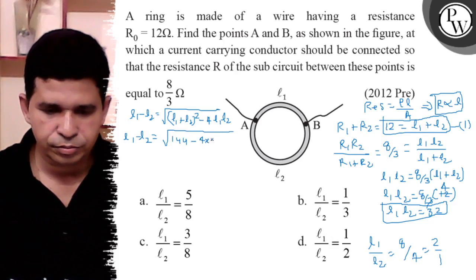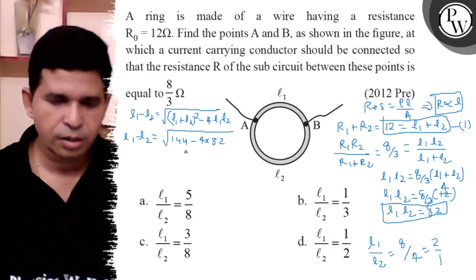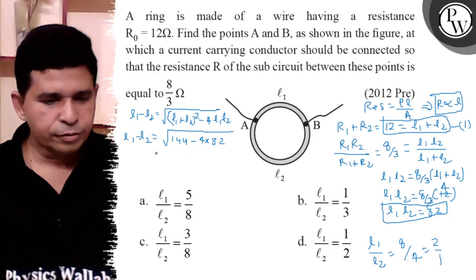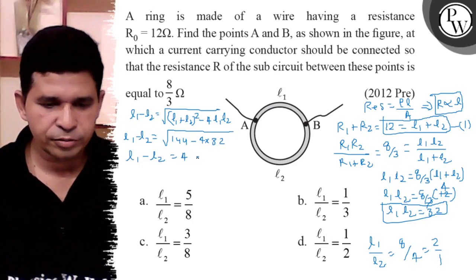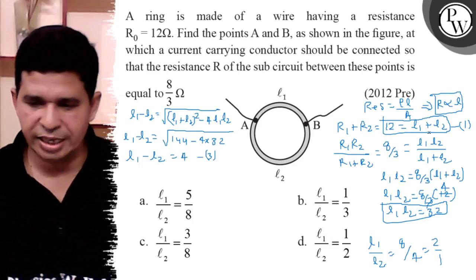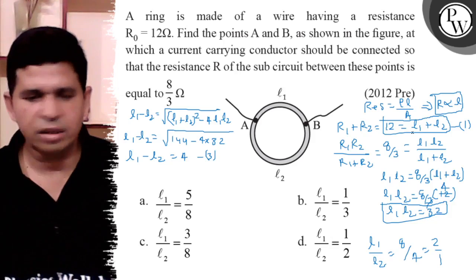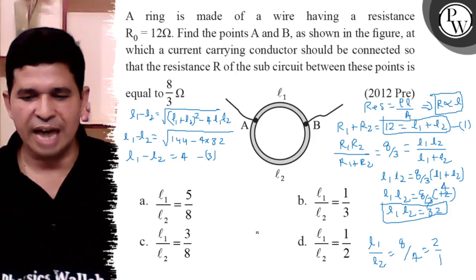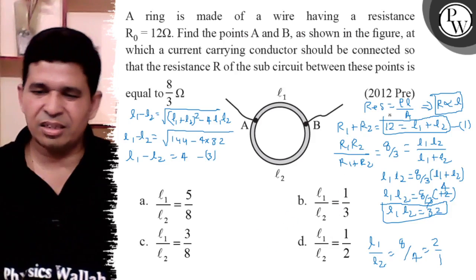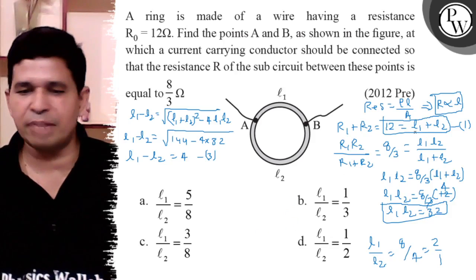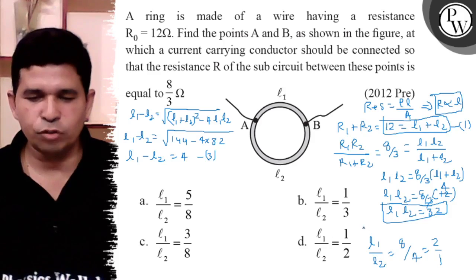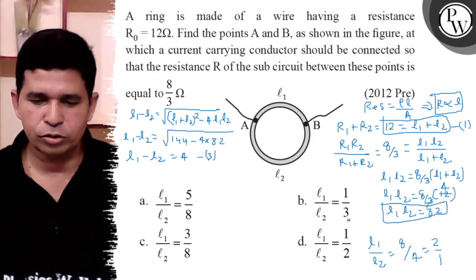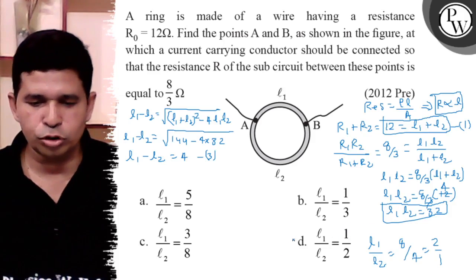So L1 minus L2 is equal to 4. Now using equation number 1 and equation number 3, the sum of the two numbers is 12 and the product of the two numbers is 32. What are the numbers? 8 and 4. So the ratio is 1 is to 2 or 2 is to 1.